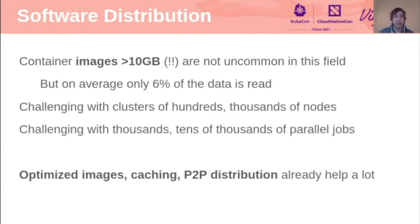Starting with software distribution: ideally container images will be very well layered and optimized. Having images that are over 10 gigabytes and not really well layered is not uncommon in the scientific field. In reality, even images that are 15 or 20 gigabytes in total — the actual workload will require less than 6% of that to run properly.